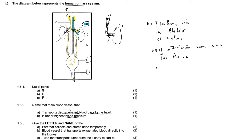Now question 1.5.3. They say give the letter and the name — we need to write the letter and the name for full marks; in total it is six marks. Give the letter and the name of the part that collects and stores urine temporarily. Urine is stored temporarily at the bladder, and we identified E as the bladder. So the answer is E, bladder.